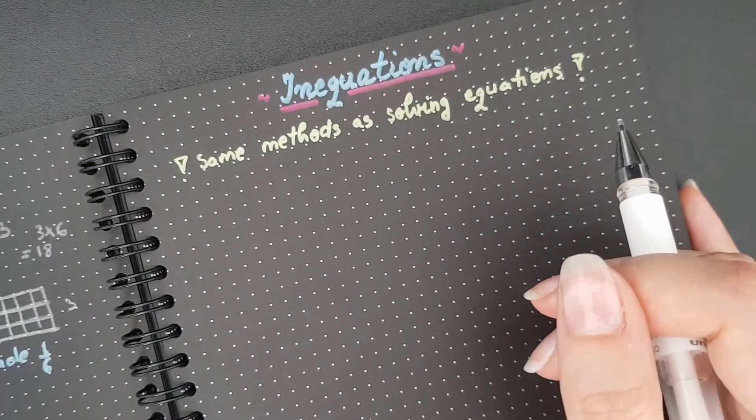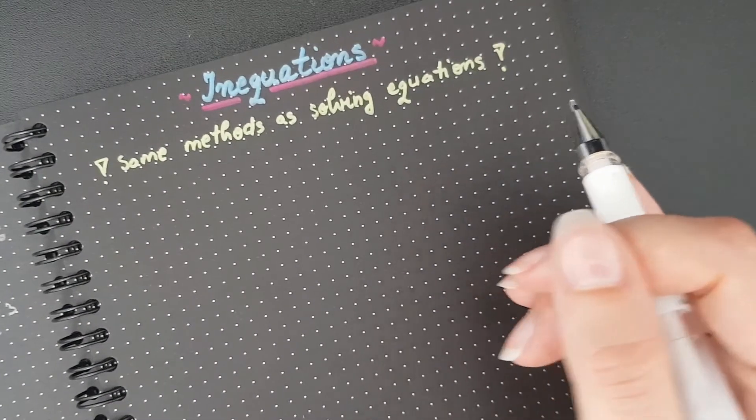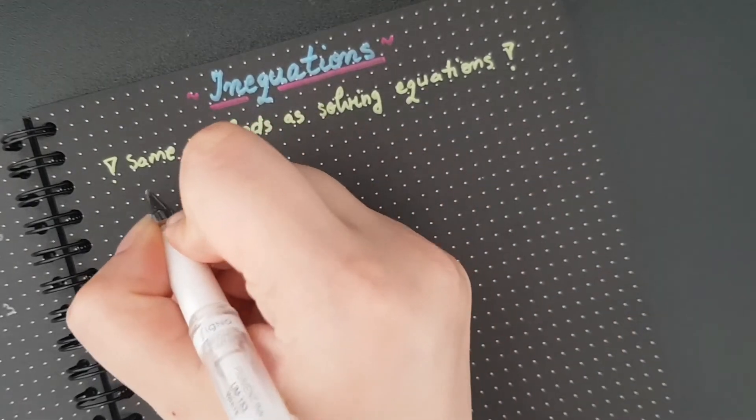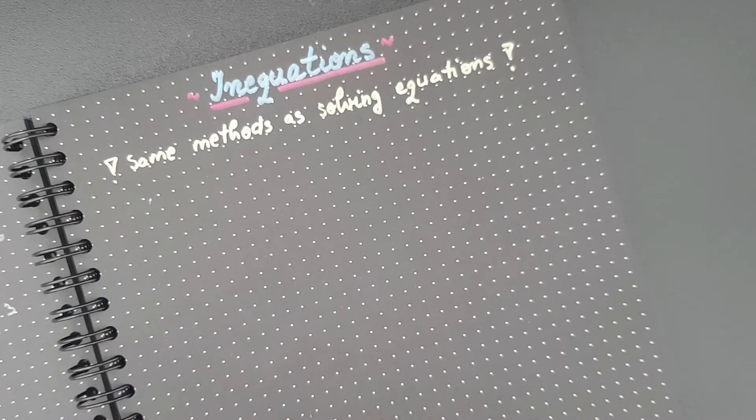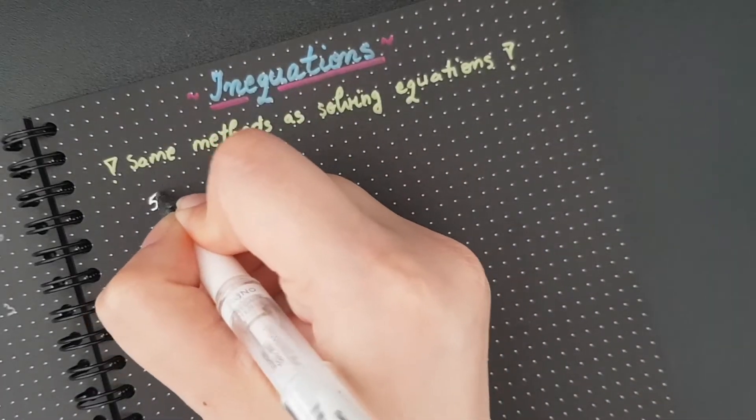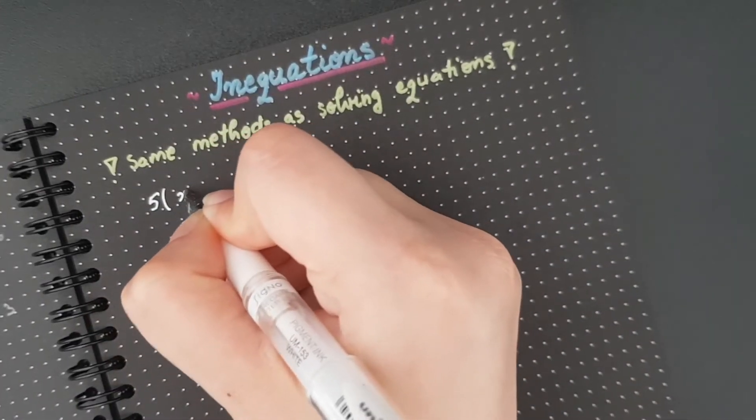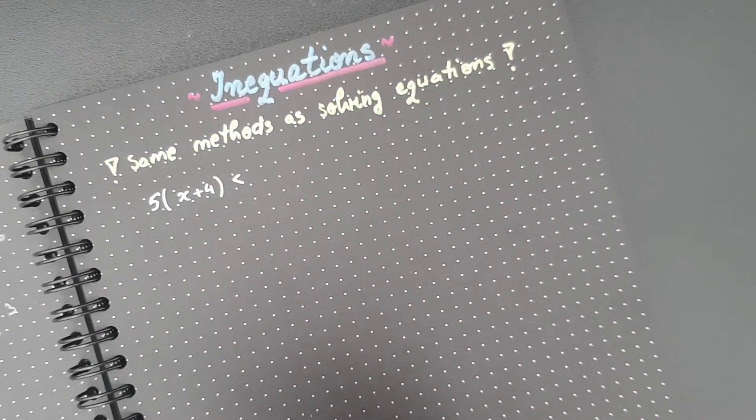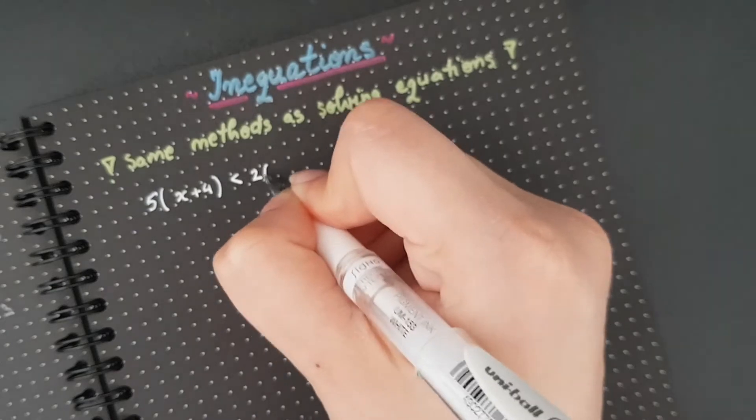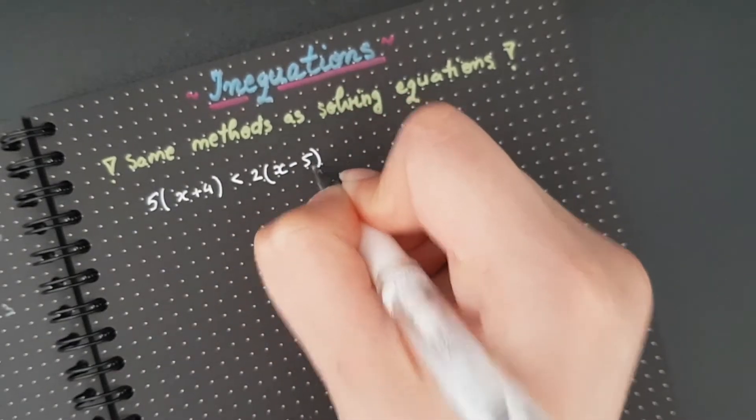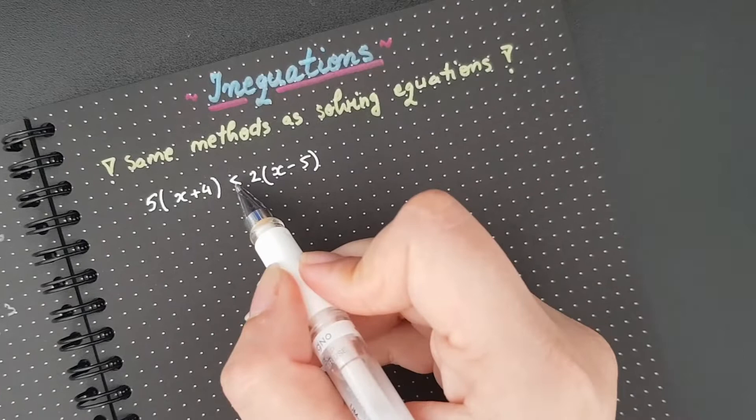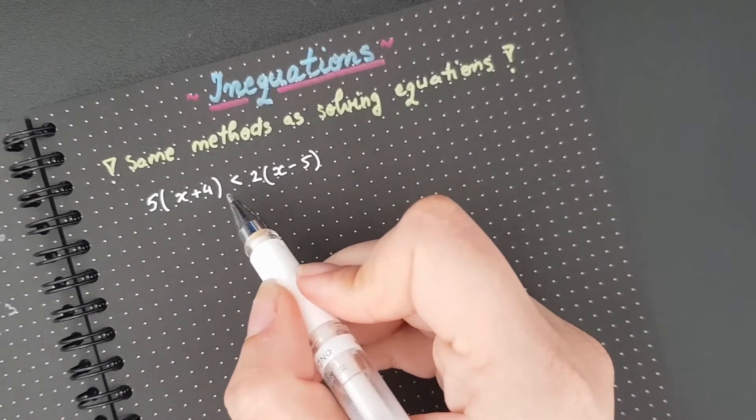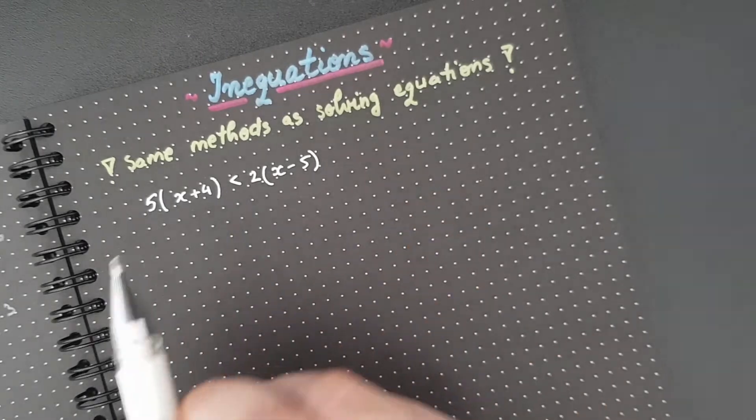So basically the biggest difference is you don't have an equal sign anymore. So I'm gonna go with the following example. So we've got 5(x+4) and instead of putting equal, I'm gonna put smaller than 2(x-5). So that's the whole difference. I don't have equal anymore. I have smaller, I could have bigger, I could have smaller equal, bigger equal.